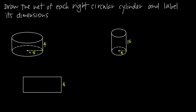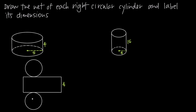Now we just need to represent the top and the bottom of the cylinder, and we'll do that with circles that we attach to the rectangle. One circle can be the base of the cylinder, and the other can be the top — ideally they should be exactly the same size. We can go ahead and label the radius of this circle as five units, because we've been told that the radius of the base, and therefore the radius of the top, is five units. So we've got the radius of the circular part and the height of the rectangular part.